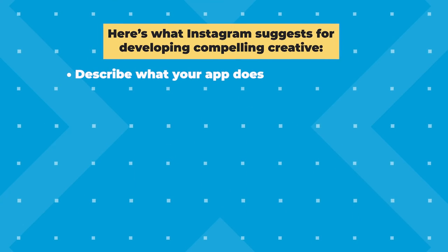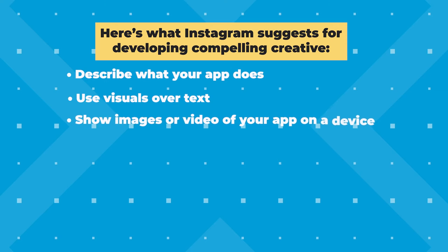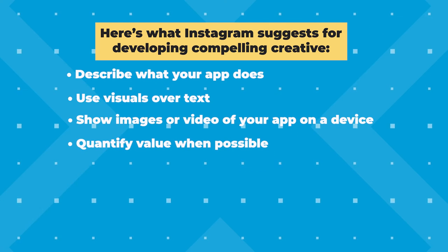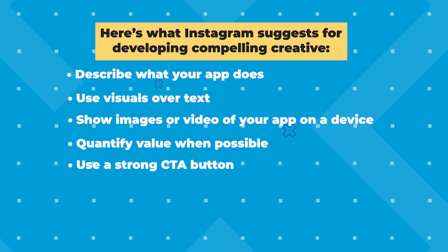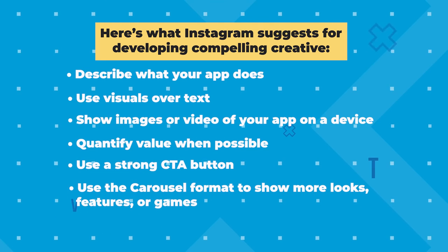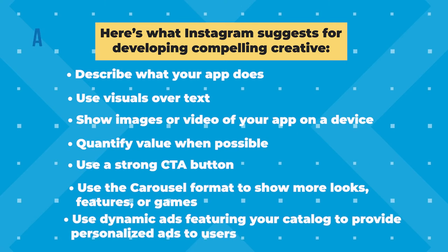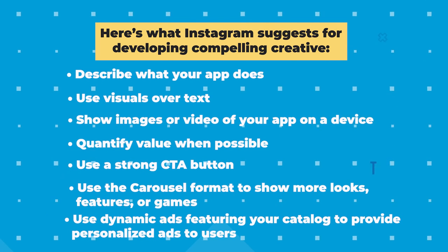Here's what they suggest when you're developing your creative — the actual ad you're going to show people. Describe what your app does. Use visuals instead of text. Show images or video of your app on a device so users know what to expect. Quantify value when possible — for example, this app has over 100,000 easy recipes for families. Use a strong call to action button that tells users what you want them to do after they click, like download or play. Use the carousel format to show more looks, features, or games. And use dynamic ads or automated app ads featuring your catalog to provide personalized ads to your users.